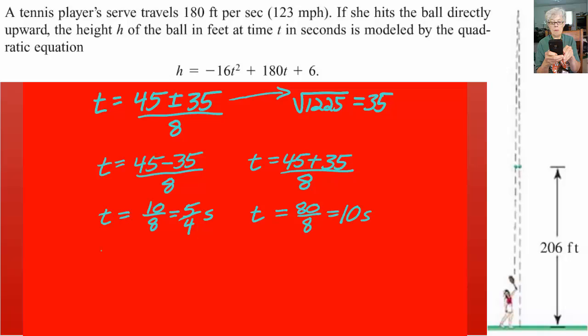If you can imagine a stopwatch starting the instant the tennis player serves the ball over her head, that's when the ball starts going up, that's when the stopwatch starts. At 1.25 seconds, the ball goes through 206 feet and the stopwatch keeps going and the ball then again goes through 206 feet as it comes down.